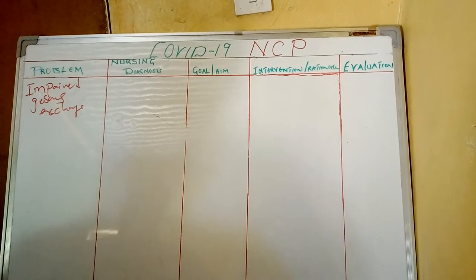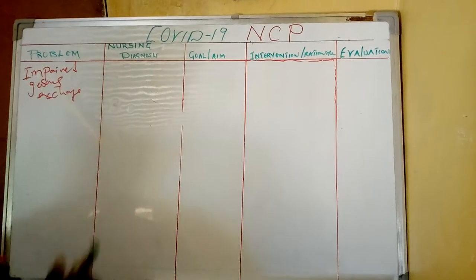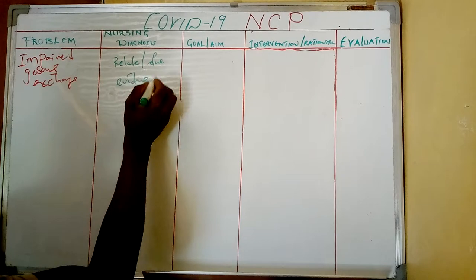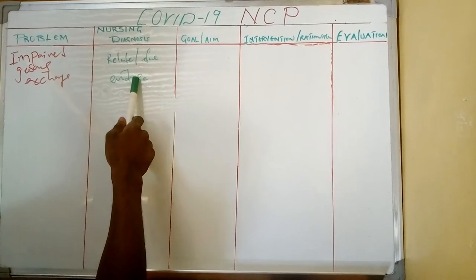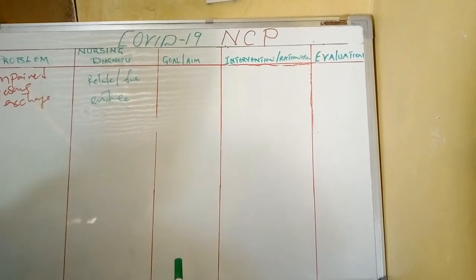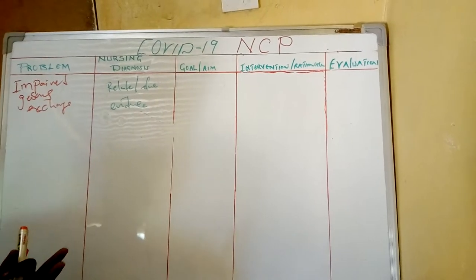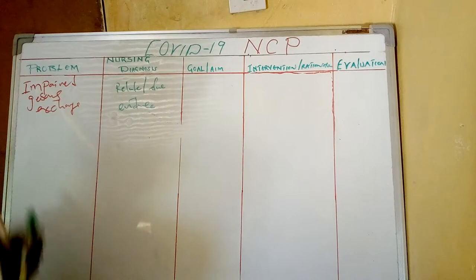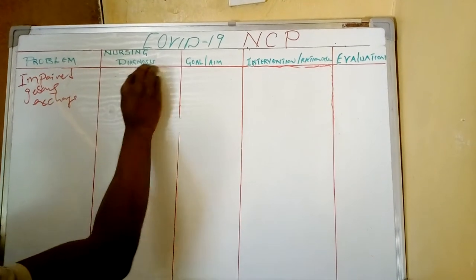The nursing diagnosis, which is table number two, considers the terms related to or due to, as well as evidenced by. A diagnosis has these key weights that are important to bring out: related to or due to, and evidenced by the problem. What is causing this patient to have impaired gaseous exchange? And what is the evidence that shows the patient has impaired gaseous exchange?